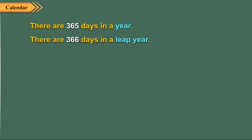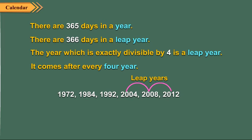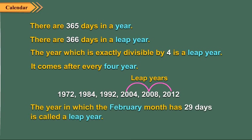But there are 366 days in a leap year. The year which is exactly divisible by four is a leap year. It comes after every four years. Also remember, the year in which the February month has 29 days is called a leap year.